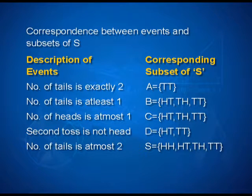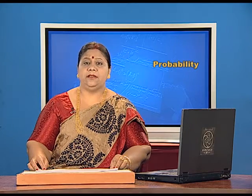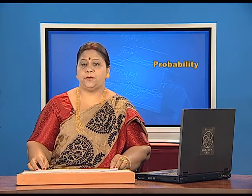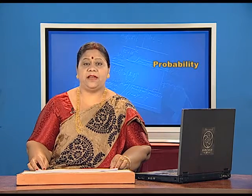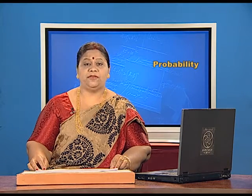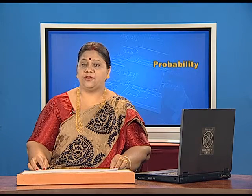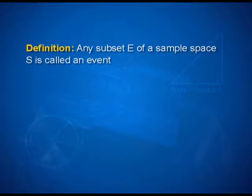Number of tails is at most 2, so the corresponding subset is {HH, HT, TH, TT}. Number of tails is more than 2 is obviously phi, an empty set. This discussion suggests that a subset of sample space is associated with an event, and an event is associated with a subset of sample space. In light of this, an event can be defined as follows: any subset E of a sample space S is called an event.